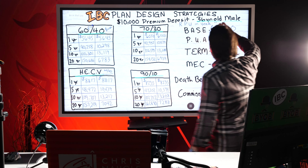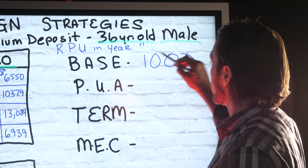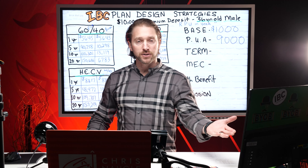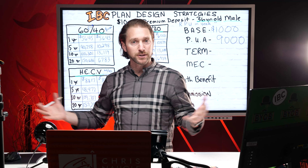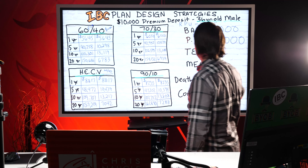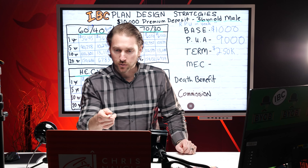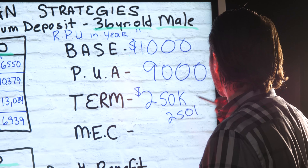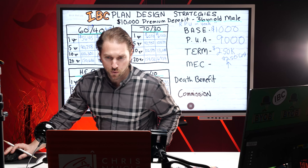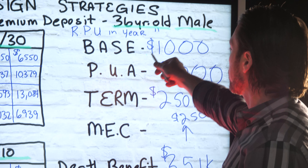On the 90-10, we change up the plan design: the base only gets $1,000, and the remaining $9,000 goes to paid-up additions. You're thinking that's what you want — less money going to the costly base and more into the general account. Sounds like a win-win, but this design requires about $250,000 of term insurance to support the MEC guideline. With $1,000 to the base, the advisor commission is based on just $1,000 — about $550.